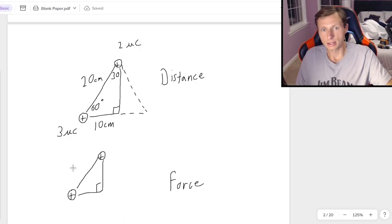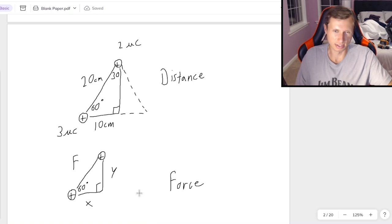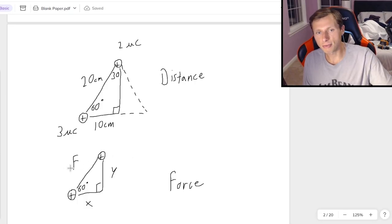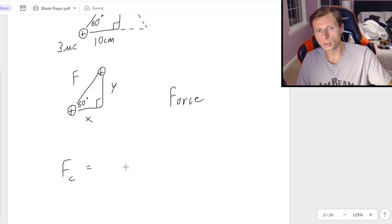Have a distance right triangle and a force right triangle. The reason why is this force is unknown, and then I have the x and y components. Now these triangles are similar to each other. In other words, the angles are the same, but the numbers could be different. As a matter of fact, they definitely will be different because force is not the same thing as distance. But the reason why I'm doing this is because I need to find the force, and then break it up into components.